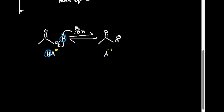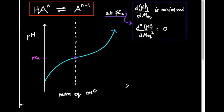So in this video, we're going to talk about the titration of a monoprotic weak acid. Monoprotic means it has one dissociable proton; diprotic has two, triprotic has three, and so forth. There are lots of ways to analyze a titration curve, and we're going to take a very analytical approach — specifically the theory behind how you determine where the pKa is.